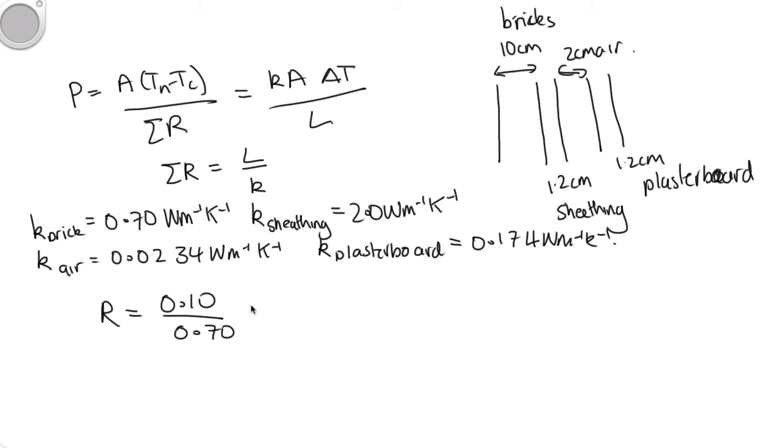So R total is equal to 0.10 meters over 0.70 plus we've got the sheathing, so that's 0.012 meters over 2.0, plus the air, which is 0.02 over 0.0234, plus the plasterboard, which is 0.012 over 0.174.